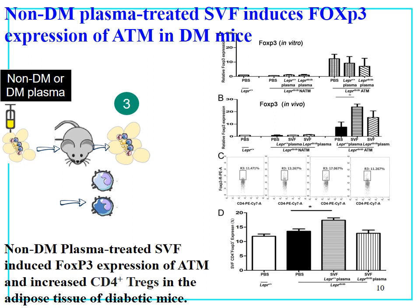Next, we evaluated the Treg cell population in adipose tissue. SVF treated with non-diabetic plasma and injected into adipose tissue could increase the Treg cell population in the adipose tissue of db/db mice. Using RT-PCR and flow cytometry, both methods confirmed that Treg cells were increased after treatment with SVF.